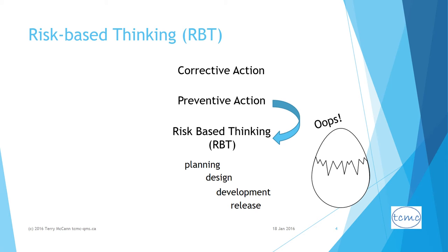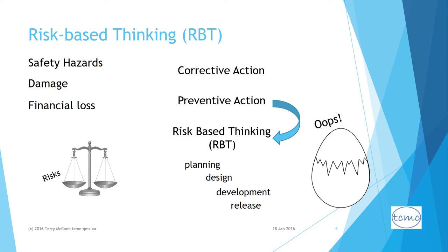By risks, we are talking not only about potential hazards to health and safety, but also the risk of damage to property and/or financial loss, whether for the customer, a third party, or the organization itself. The presumption is that one important purpose of a quality management system is precisely to prevent bad things happening. Thus, risk-based thinking will weigh risks against the benefits of proceeding or not proceeding with a course of action, and decide on implementing mitigations or not.